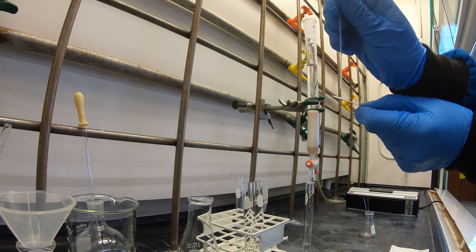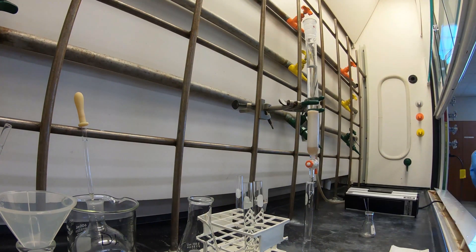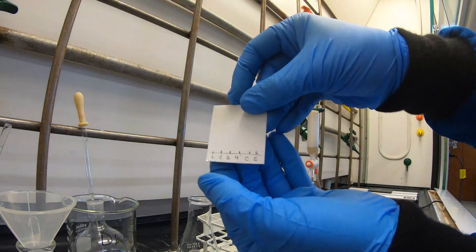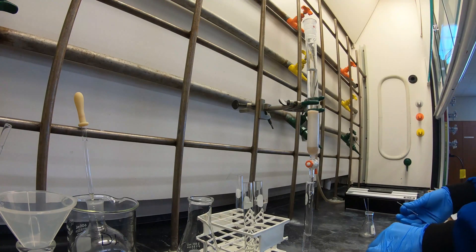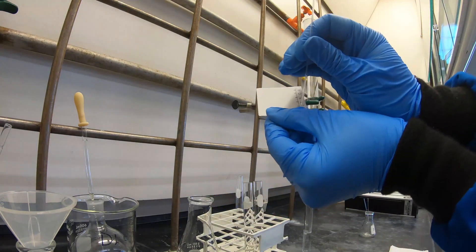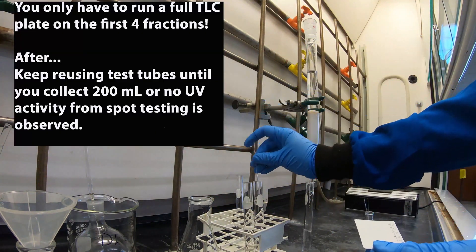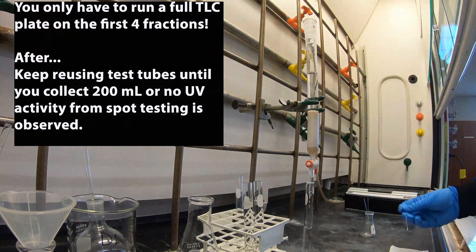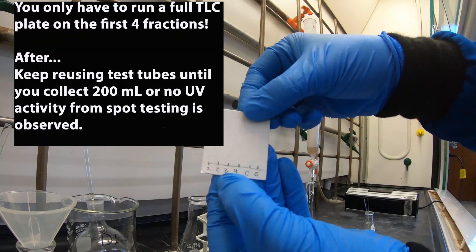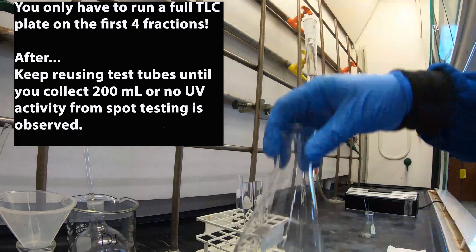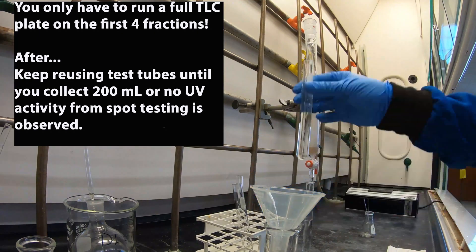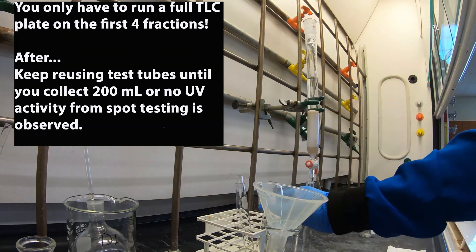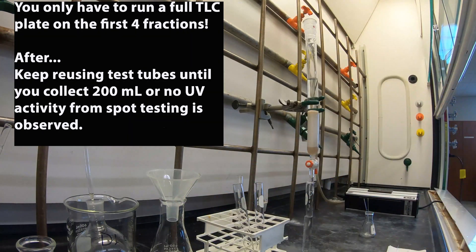Collect four large test tube fractions and then stop your column. Then you're going to prepare an actual TLC plate. You're going to have your four fractions, your standard, and your crude DEET product spotted on this plate. Run the TLC plate using hexanes as your eluent. After running your TLC plate, be sure to circle the products that appear beneath the UV light. You're actually going to continue collecting fractions until you've used 200 ml of hexanes or you're no longer observing product by spotting on the TLC plate and looking under UV light.